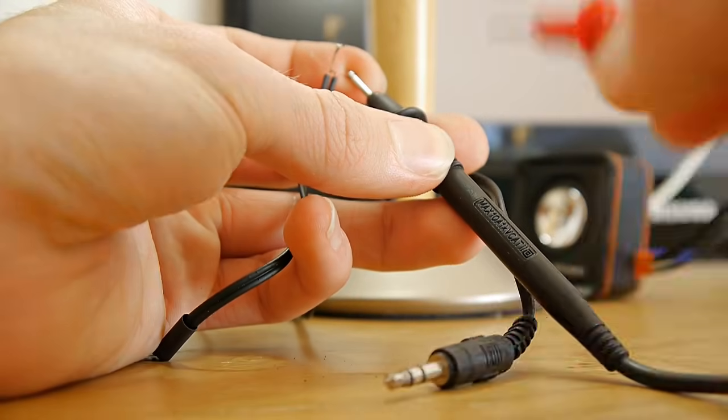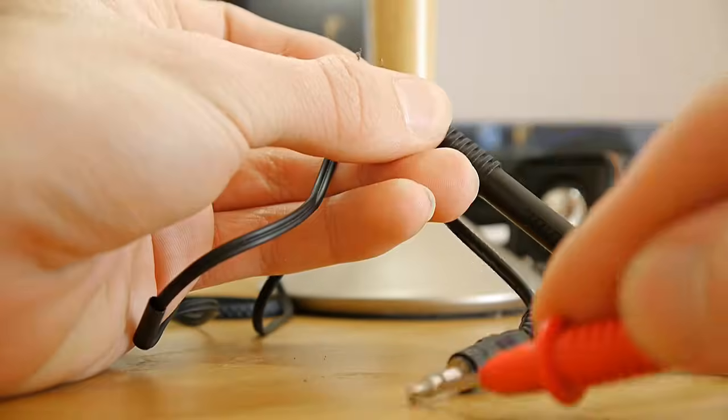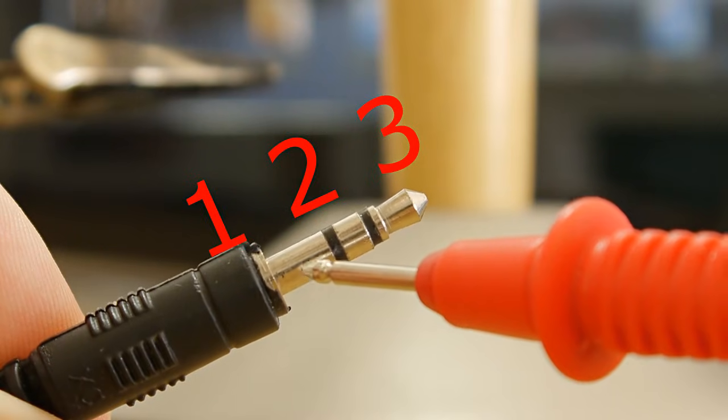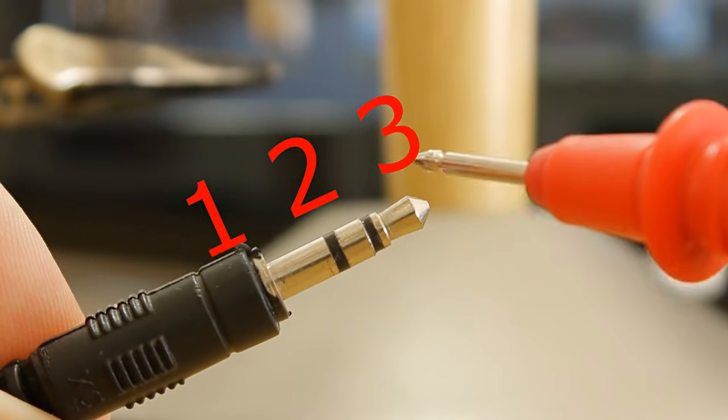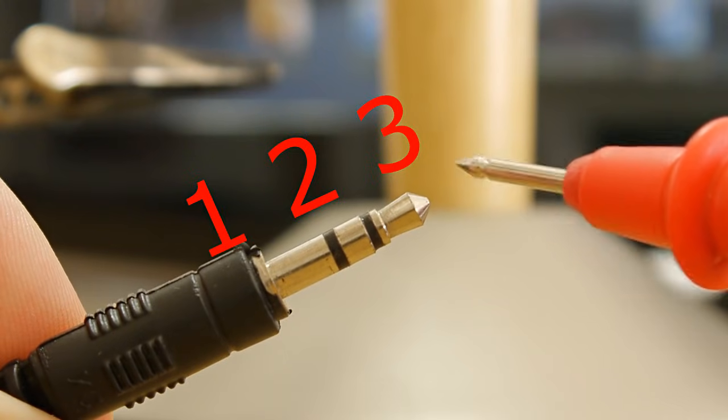Next, get your headphone jack cable and find out which of its wires goes to each of the notches on the jack using a multimeter. One represents ground, two represents the right channel and three represents the left channel. Make sure you know which is which.